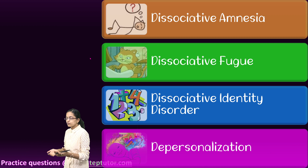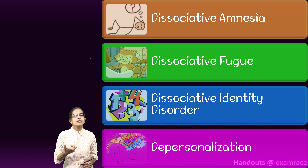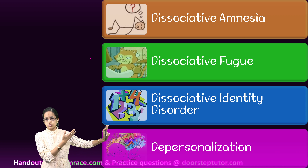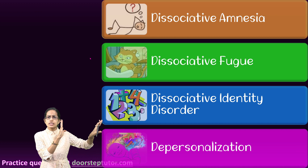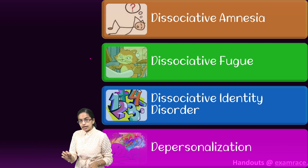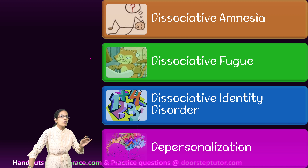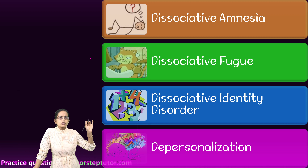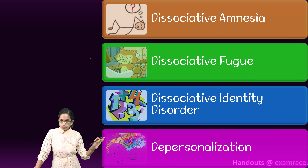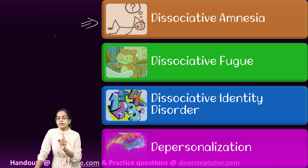Dissociative amnesia means the person is unable to recall information related to a stressful situation — the trauma and stress are completely out of mind. This occurs without any organic cause such as head injury or brain damage. The person reports loss of the stressful or traumatic events, beyond normal levels of forgetting, and this is therefore called dissociative amnesia.